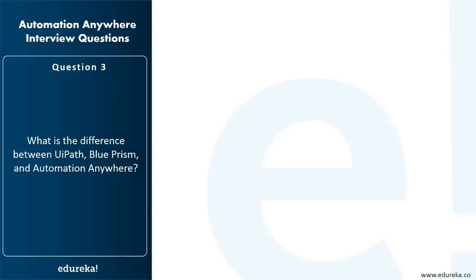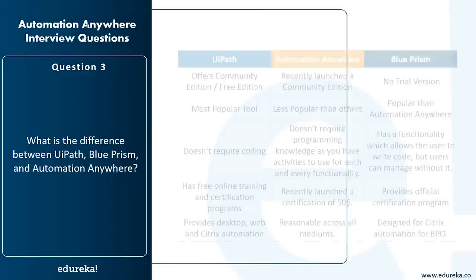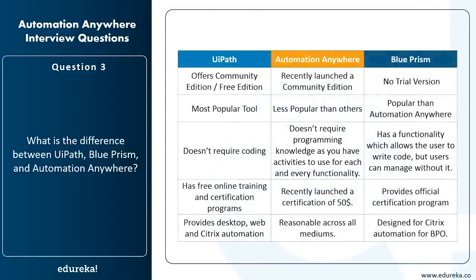The next question compares UiPath, Blue Prism, and Automation Anywhere — the three most popular RPA tools. UiPath offers a community edition (free for lifetime). Automation Anywhere recently launched a community edition and also has an enterprise edition with a 30-day trial. Blue Prism has no free edition — you must purchase a license. In terms of Google Trends popularity, UiPath is currently the most popular tool, though Automation Anywhere's community edition launch may change this competition.